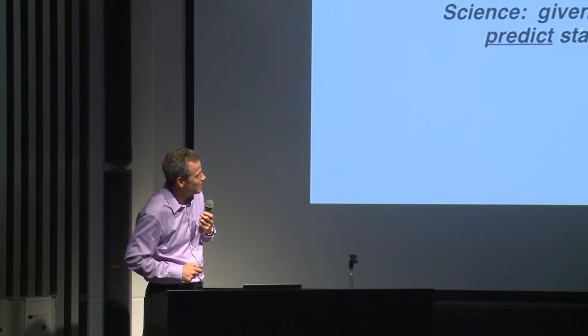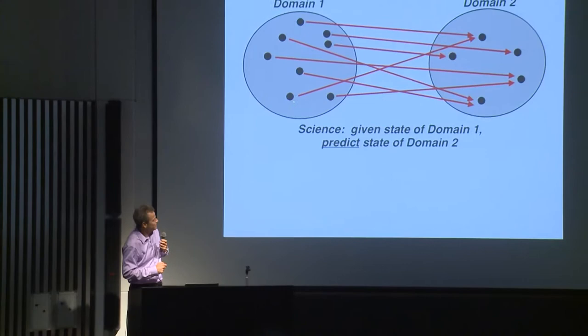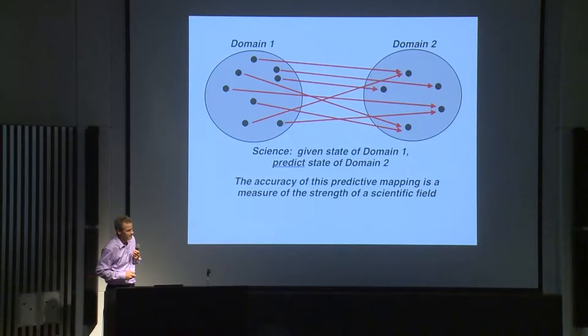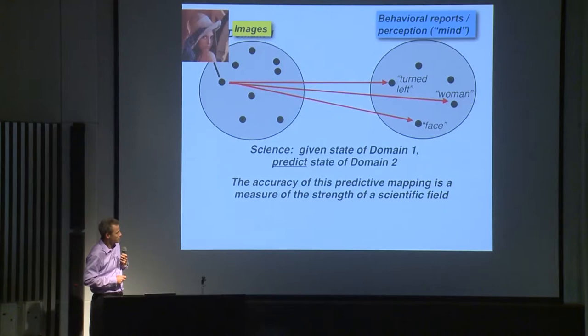Let me take you through the sort of talk I like to give about this field of higher level vision. It's a hard problem — what is the brain doing in these complicated high-level visual areas? Any kind of science, ultimately, requires predictive models that take measurements in some domain and make predictions in another domain, like where the planets are going to be tomorrow in physics. The accuracy of this predictive mapping is really the strength of a scientific field.